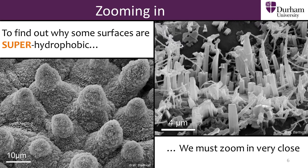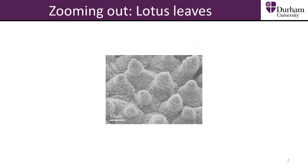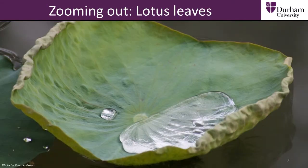These images are both from leaves of plants. The first surface image is the leaf of the lotus plant. Its bumpy surface makes it hard for water to sit on it and spread out, meaning the water stays as large droplets.